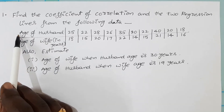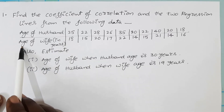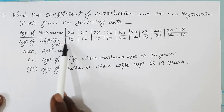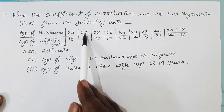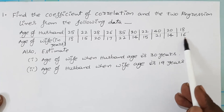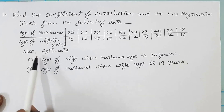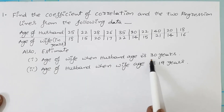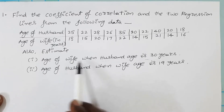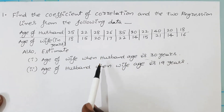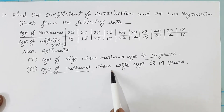The first row represents the age of husband and the second row represents the age of wife in years. If the husband's age is 25, then the wife's age is 18. Similarly, if the husband's age is 22, the wife's age is 15, and if the husband's age is 18, the wife's age is 16. We have to estimate the age of wife when husband's age is 30, and also estimate the age of husband when age of wife is 19 years.